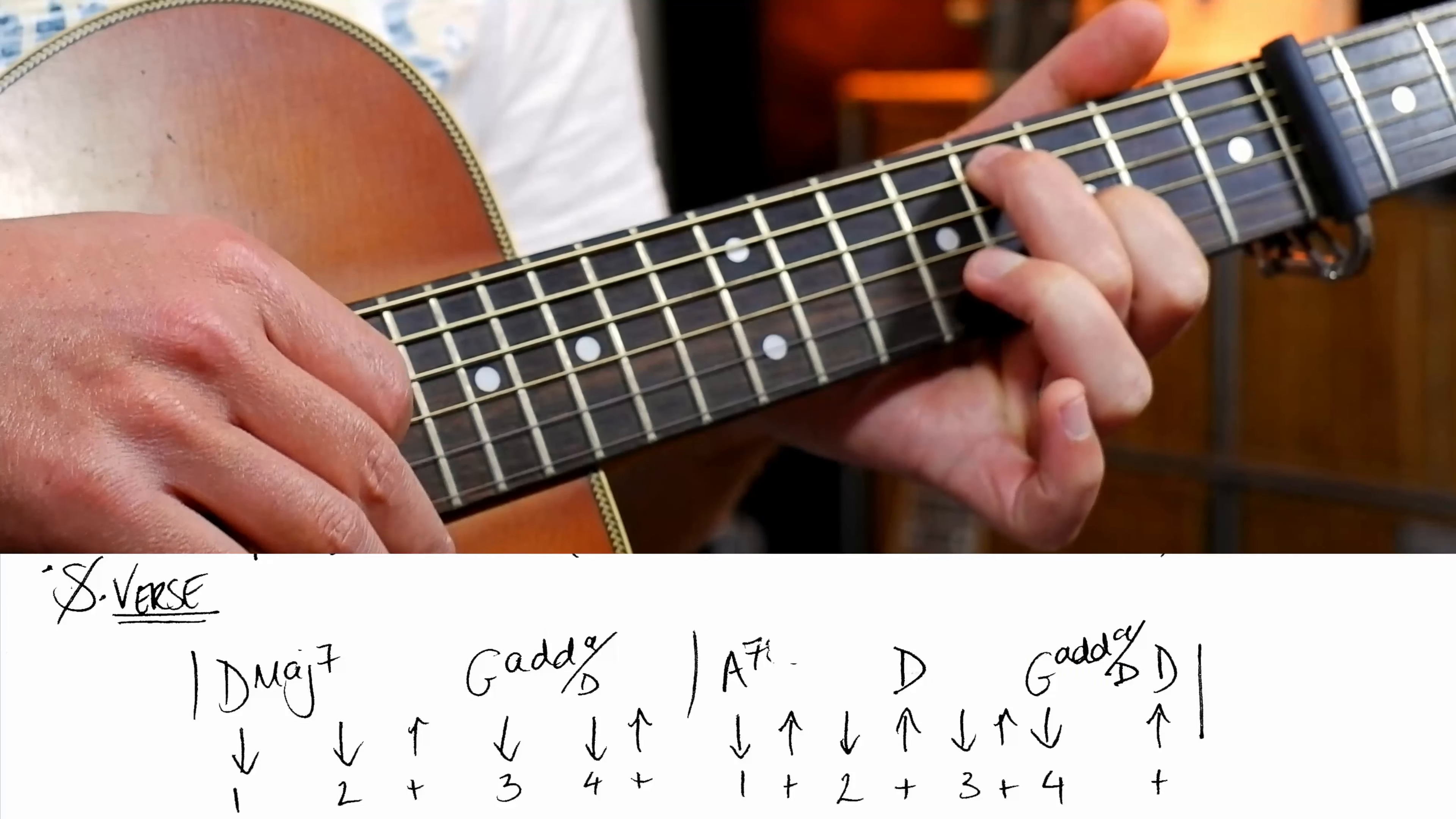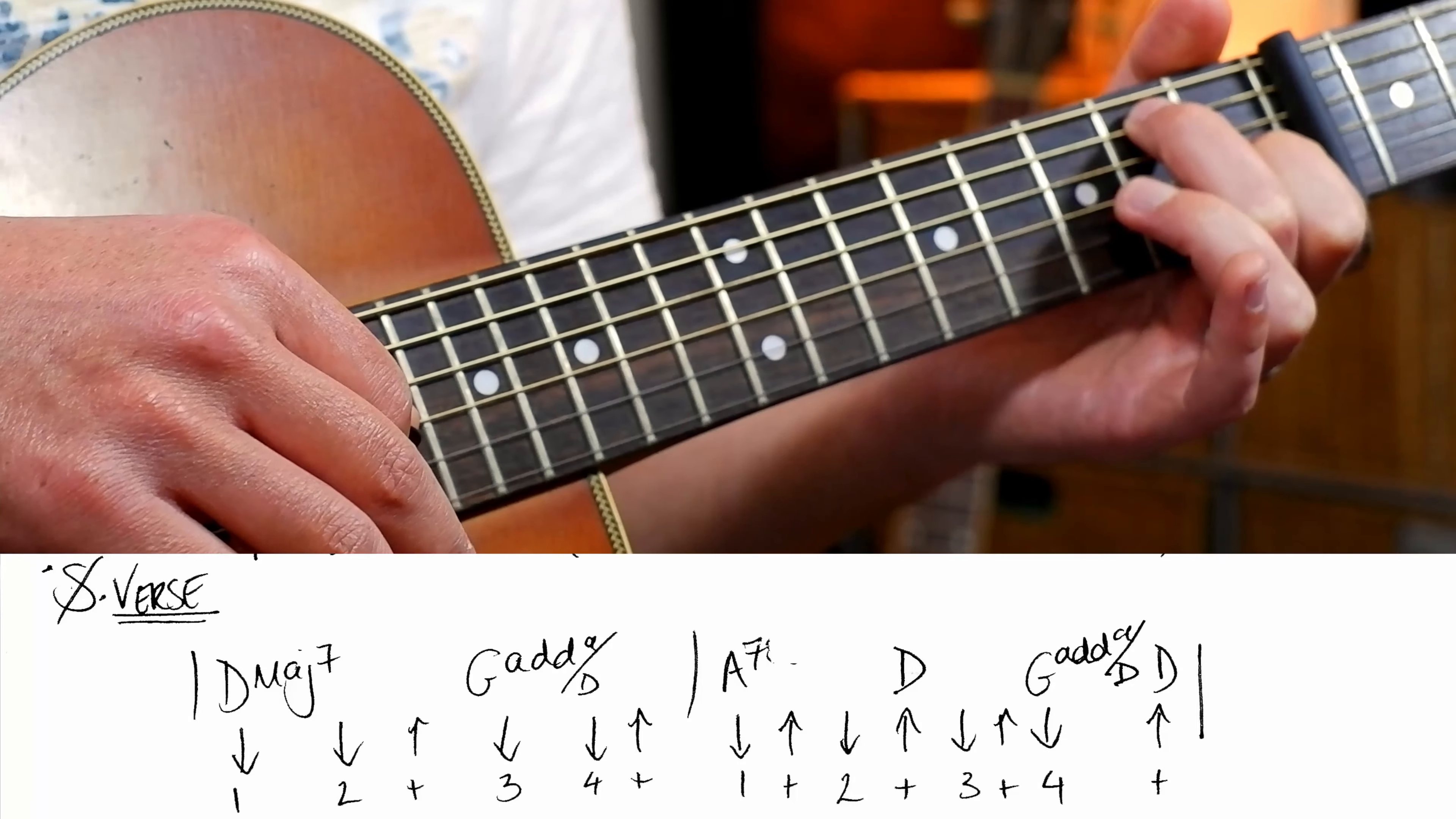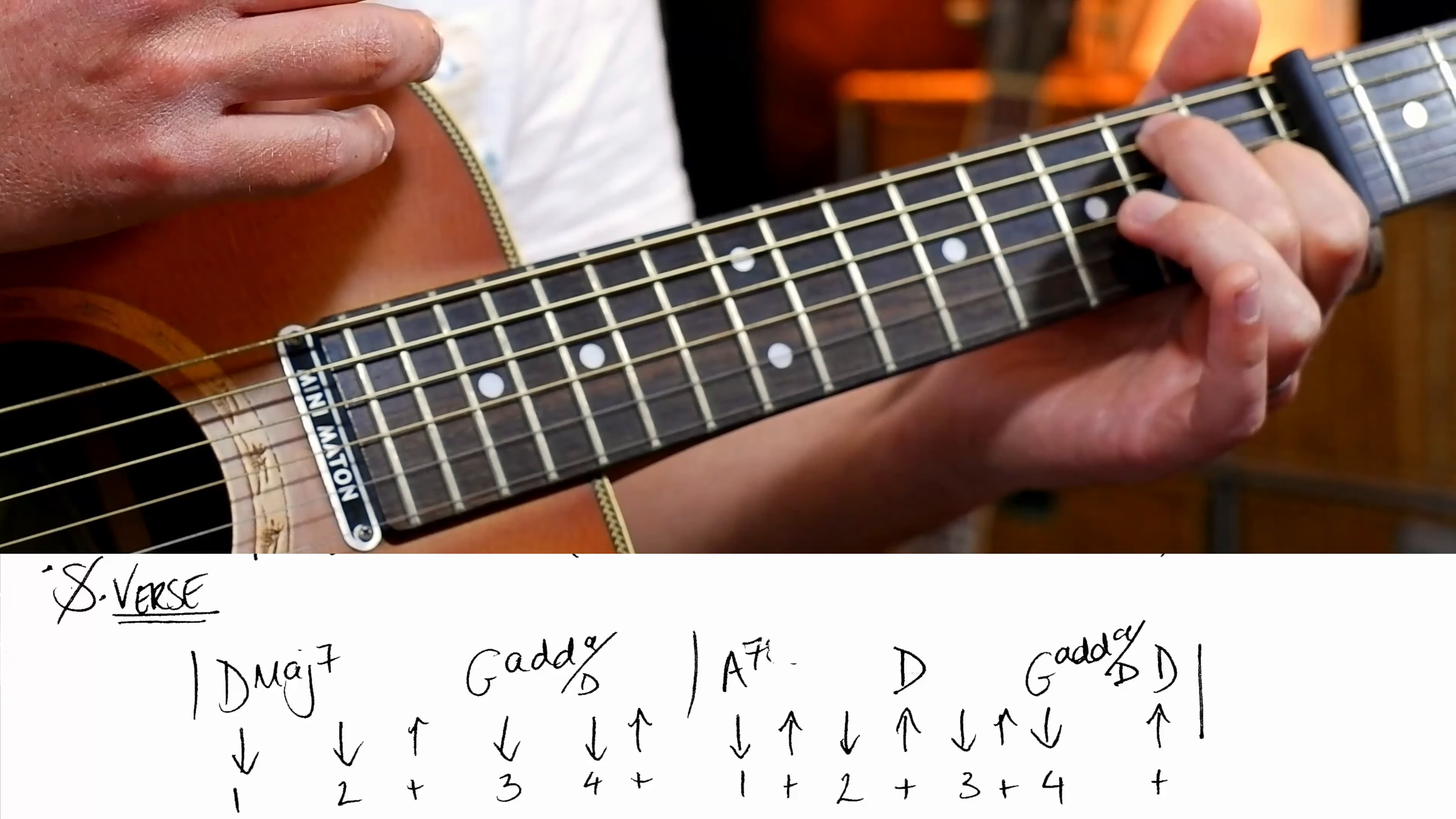Then we're going to kick off the verse. This chord here with our four and three on the fifth and third strings is a D major seven. All right, so we are going to play down down up. This is a G add nine over D. That's what we've called it. But you just slide the same shape down two frets.